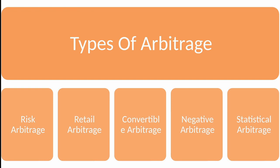Third is convertible arbitrage, which involves buying a convertible security and short selling its underlying stock. Fourth is negative arbitrage. Negative arbitrage refers to the opportunity that is lost when the interest rate a borrower pays on its debt is higher than the interest rate at which those funds are invested — that is, borrowing at a higher interest rate than investing at a lower interest rate.